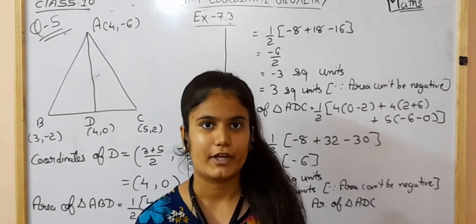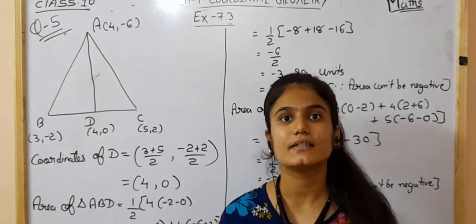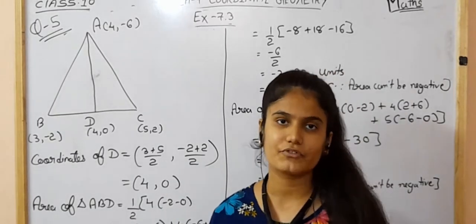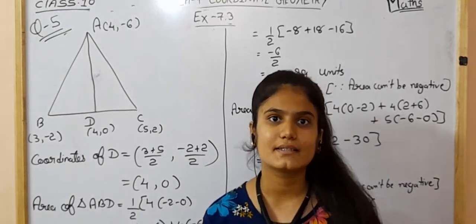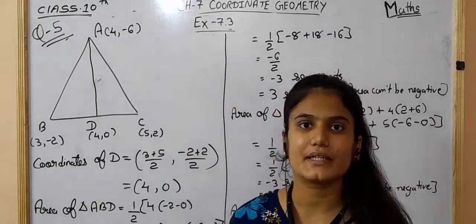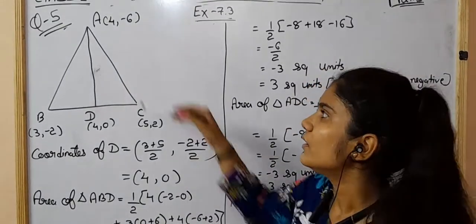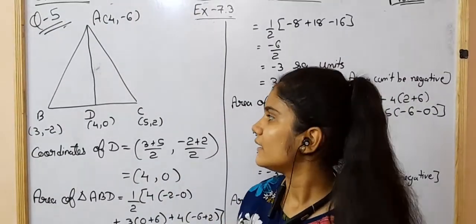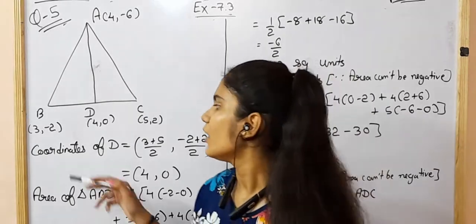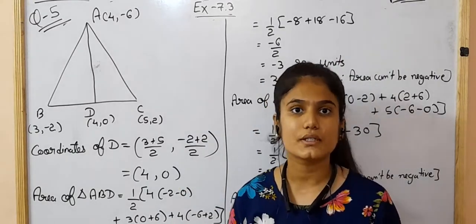In question number 5, we have to prove that a median of a triangle divides it into two equal areas — as learned in standard nine. The vertices of triangle ABC are given as (4, −6), (3, −2), and (5, 2). We draw median AD, where D is the midpoint of BC. Using the midpoint formula, the coordinates of D are (4, 0).